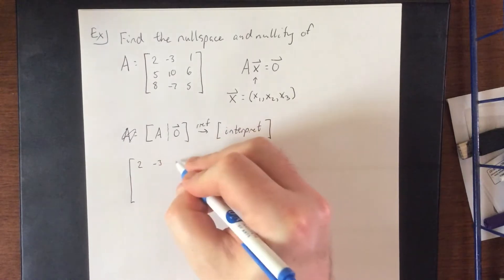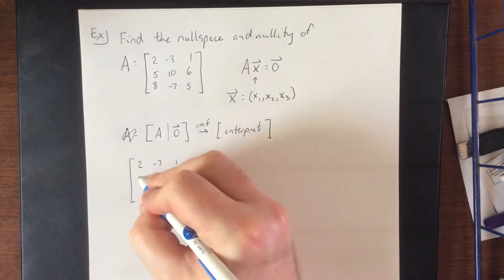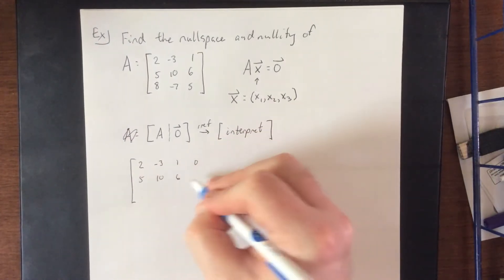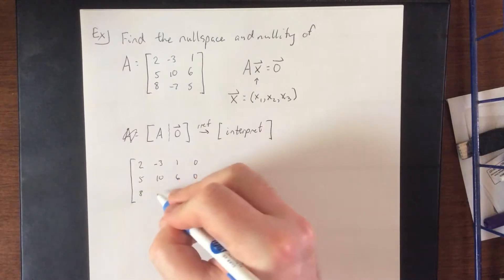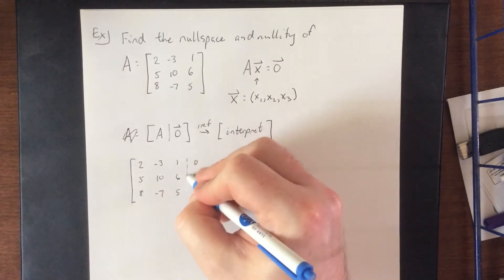We'll be representing it as a column matrix to make sure that the multiplication makes sense here. Now all that this means for us is that we'll be taking the matrix A and augmenting with the zero vector. So 2, negative 3, 1, augment with 0. 5, 10, 6, augment with 0. 8, negative 7, 5, augment with 0.